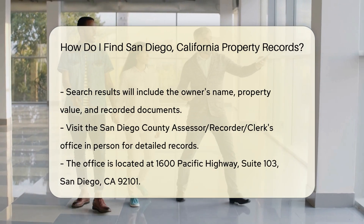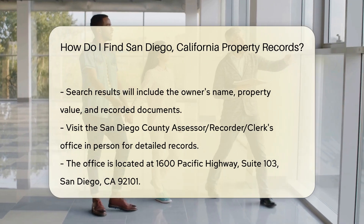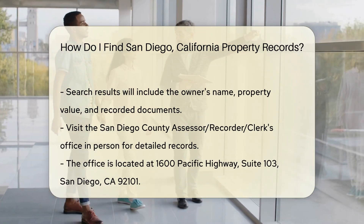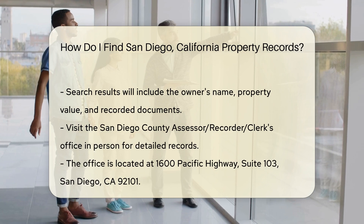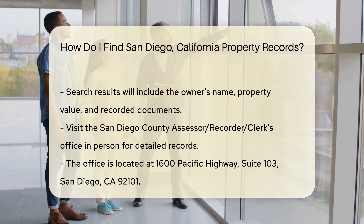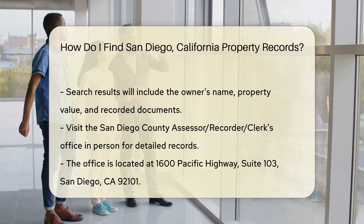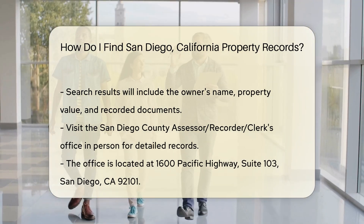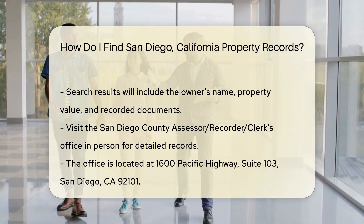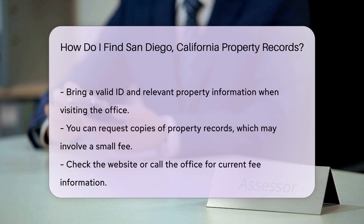For more detailed records, you might need to visit the San Diego County Assessor Recorder Clerk's office in person. The office is located at 1600 Pacific Highway, Suite 103, San Diego, CA 92101. When visiting the office, bring a valid ID and any relevant information about the property.